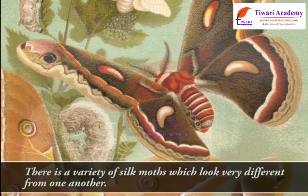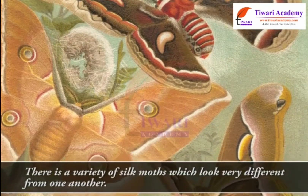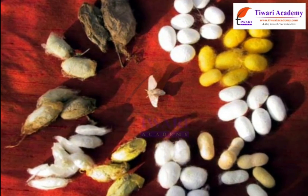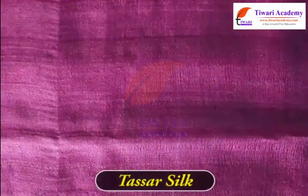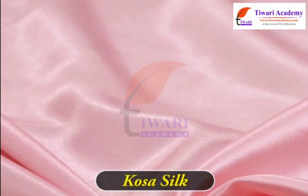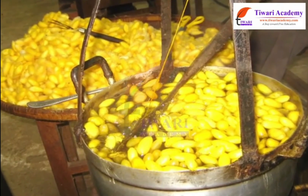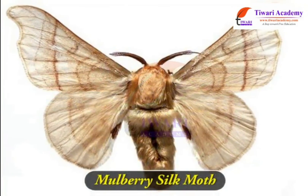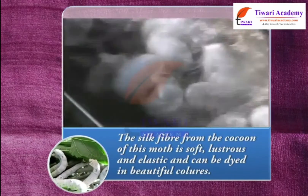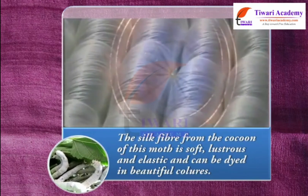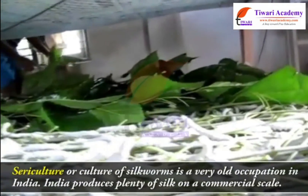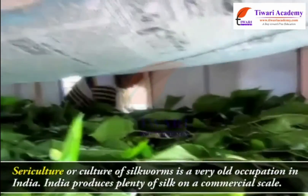There is a variety of silk moths which look very different from one another, and the silk yarn they yield is different in texture — coarse, smooth, shiny, etc. Thus, tassar silk, mooga silk, kosa silk, etc. are obtained from cocoons spun by different types of moths. The most common silk moth is the mulberry silk moth. The silk fiber from the cocoon of this moth is soft, lustrous, and elastic, and can be dyed in beautiful colors. Sericulture, or the culture of silkworms, is a very old occupation in India, and India produces plenty of silk on a commercial scale.